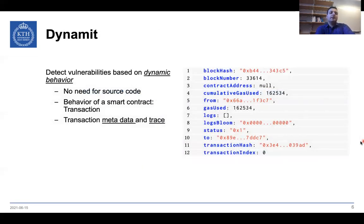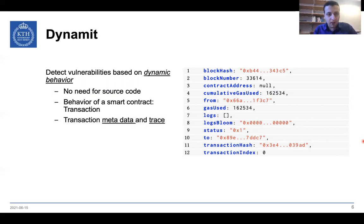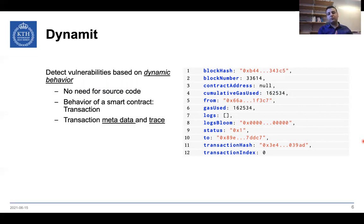We present DYNAMIT, which is a framework to detect vulnerabilities on smart contracts on the blockchain based solely on their dynamic behavior. Using DYNAMIT, we don't really need to have the source code of the program, because we only rely on the behavior of the smart contracts, which is retrieved by observing the transactions to and from these smart contracts.